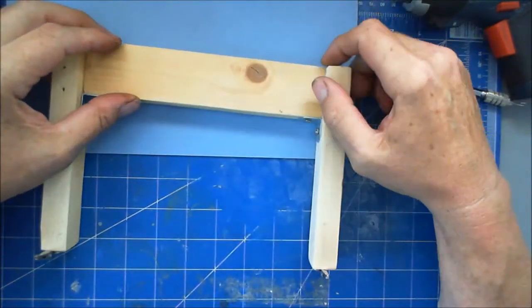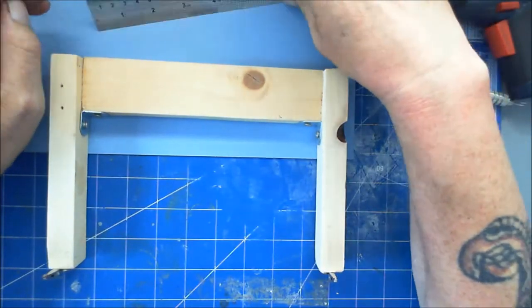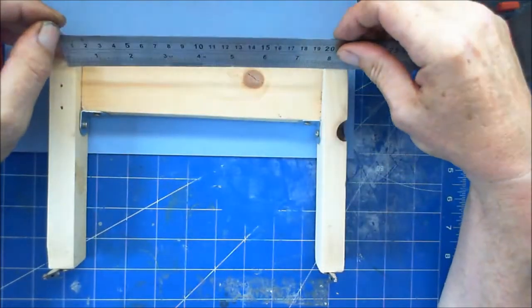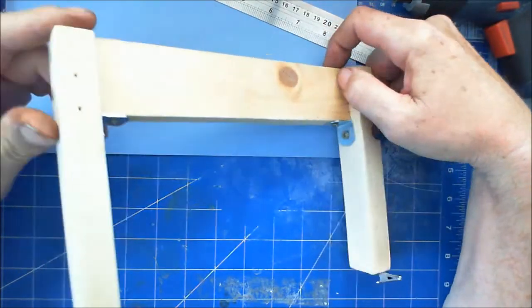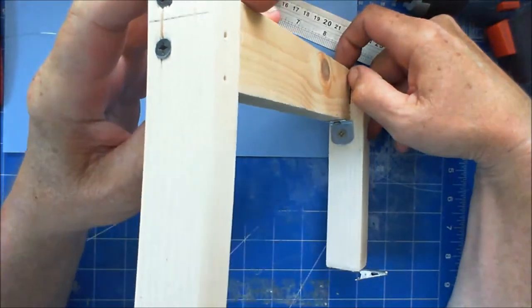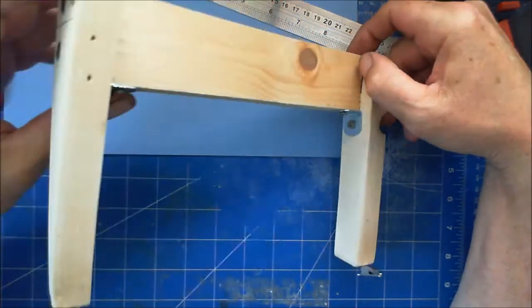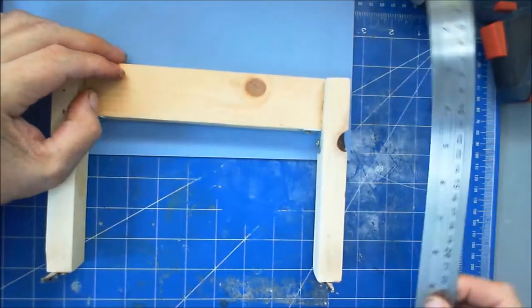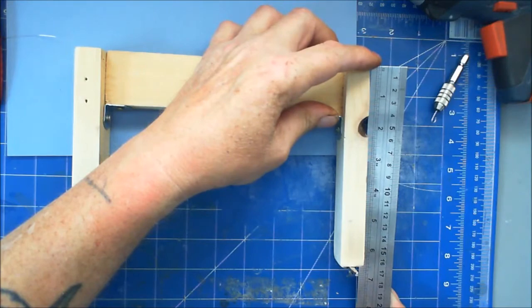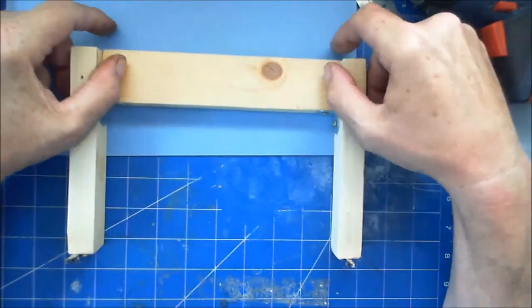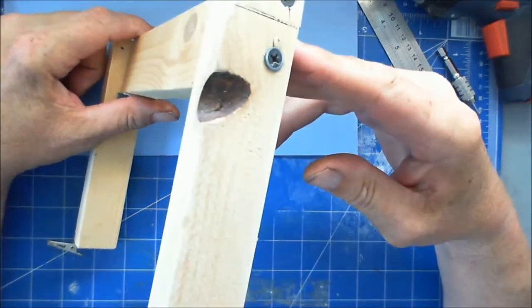All it is is one piece of 44mm by 18mm by 200mm long piece of batten at the back. The pieces on the end here are just 18 by 28mm, about 160mm long. They're just screwed at the end.